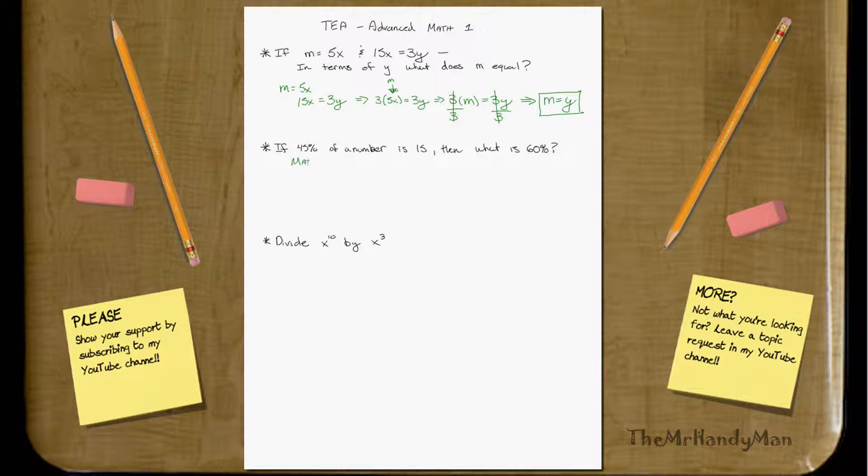I'm just going to call this mathematically. You'll find that n times 0.45, so 45% of a number, equals 15.